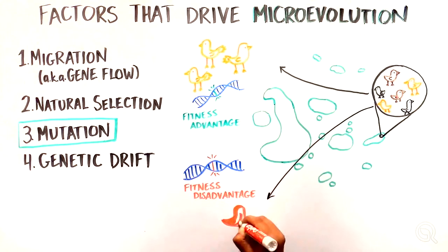a mutation that led to a brilliant red pigment on the birds might be disadvantageous because it would make those finches more visible to predators.